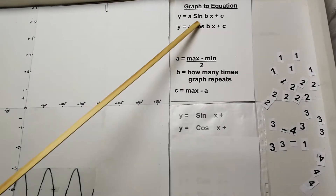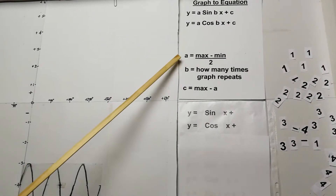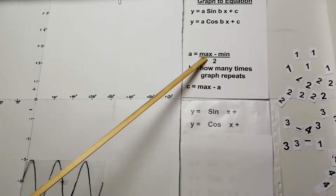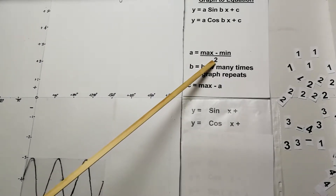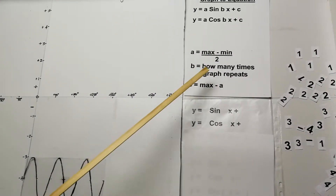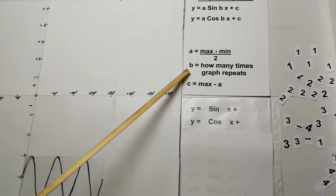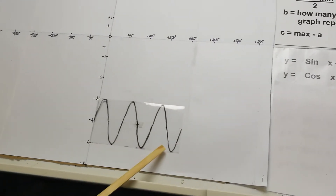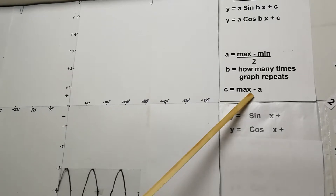It's the a, b, and c values we need to work out. The a value comes from taking the maximum minus the minimum of the graph and halving it. The b value represents how many times the graph repeats or touches the bottom. The c value is basically how much the graph has been moved up or down.